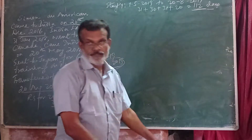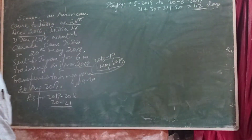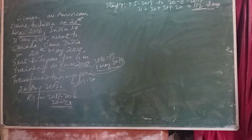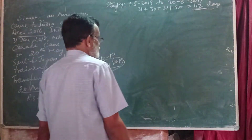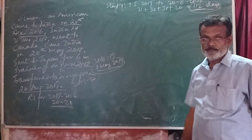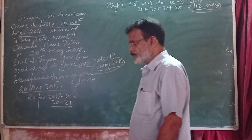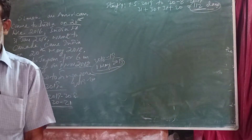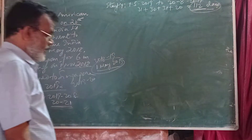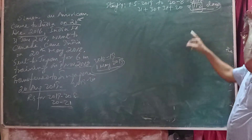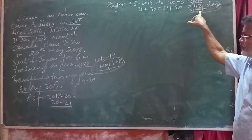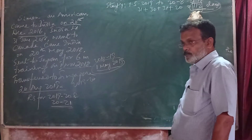During the previous year 2019-20, he was in India only for 112 days. In order to become a resident, the first basic condition says he must be in India for 182 days. So the first basic condition is not satisfied. The second basic condition is 365 days in 4 preceding previous years and 60 days in the relevant previous year. He was in India for 112 days in the relevant year, so there is a possibility of applying the second basic condition.